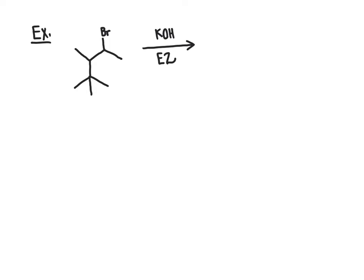Let's apply Zaitsev's rule toward one additional example problem to make sure we have a handle on how to apply it toward E2 reaction mechanisms. For this elimination reaction, predict the major organic product and provide a mechanism for how that product forms. I suggest you hit pause, try to work through it yourself, and then hit play to see how correct you were.